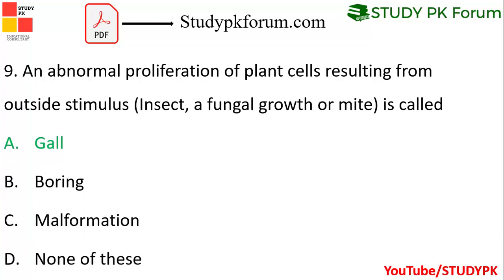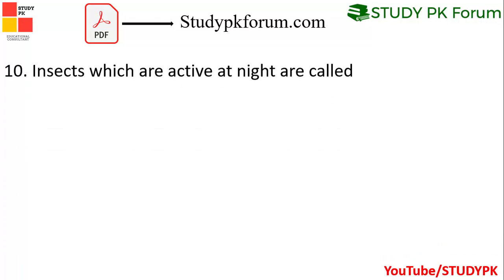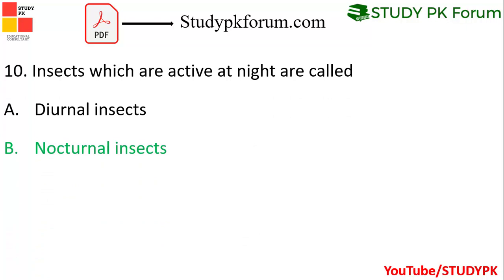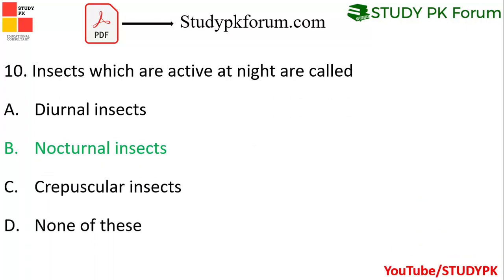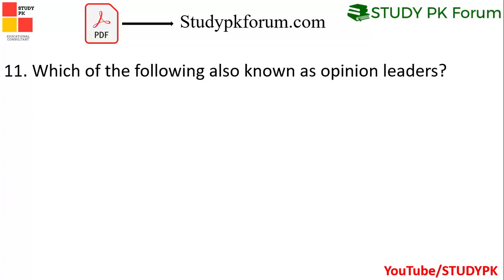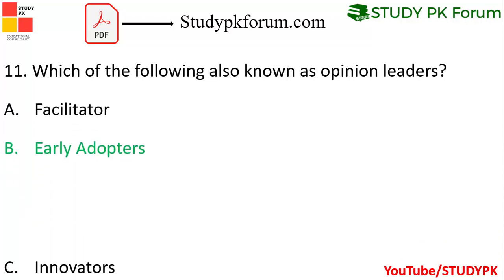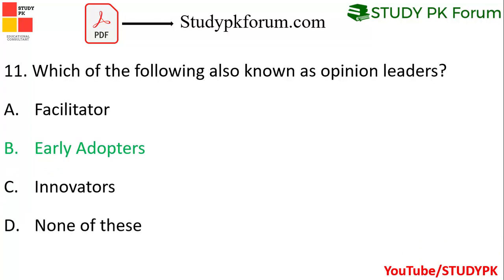Question 10: Insects which are active at night are called nocturnal insects — option B. Question 11: Which of the following is also known as opinion leaders — Salitators, Early Adopters, Innovators, or none of these? Early Adopters is the right answer.